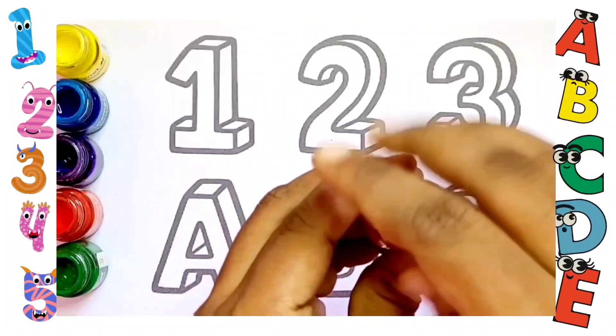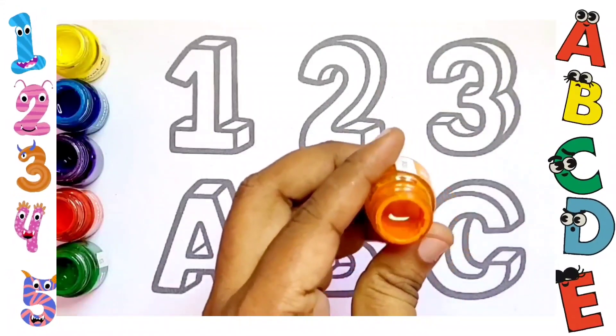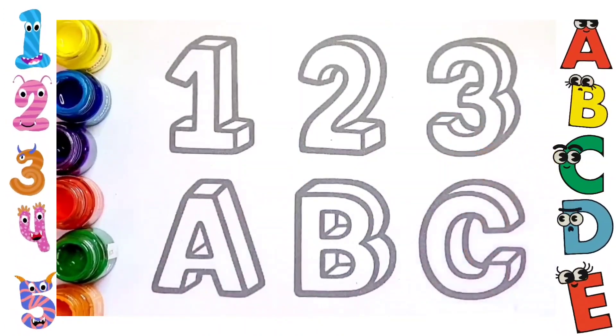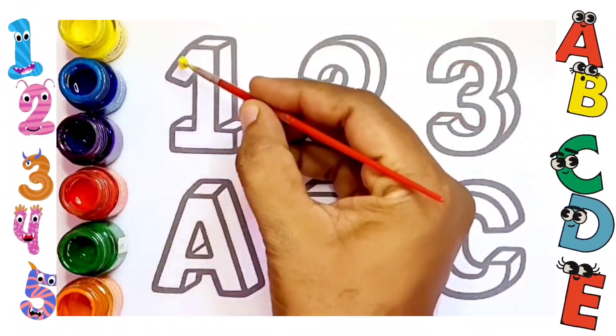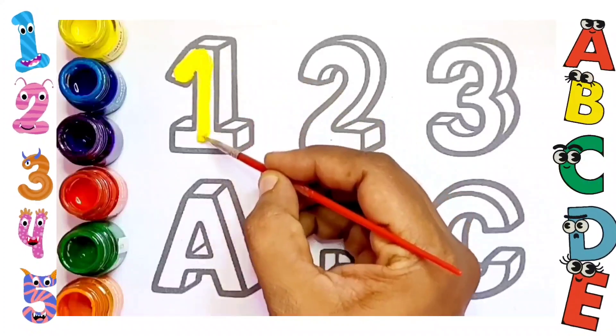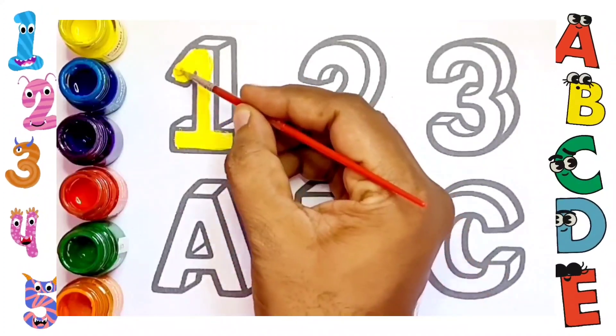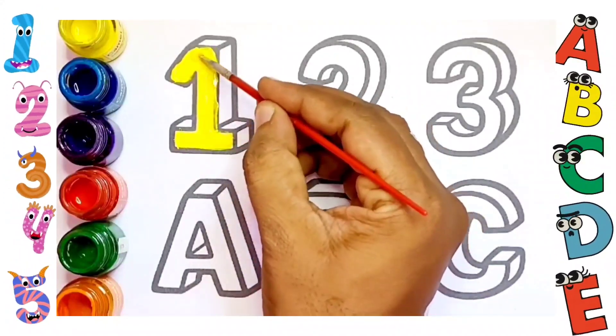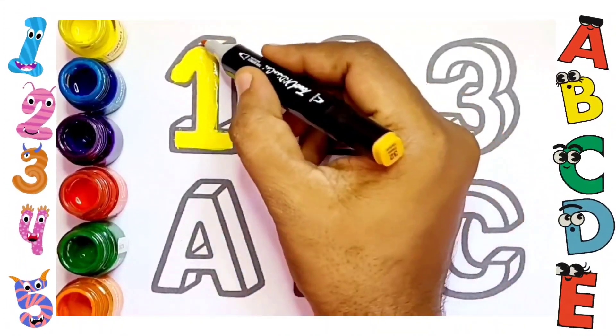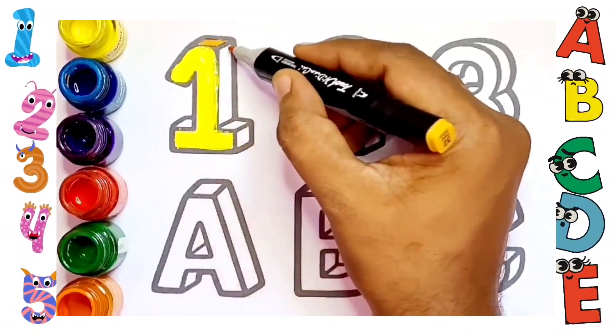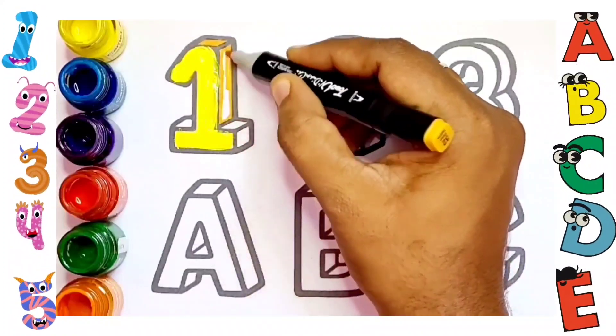First, number one. O-N-E, one. This is number one. One gets yellow color.